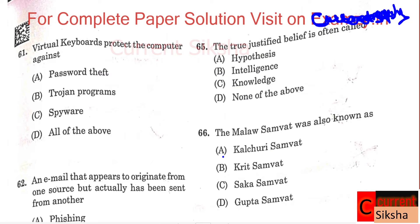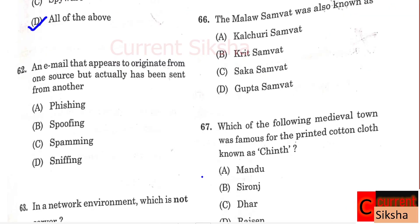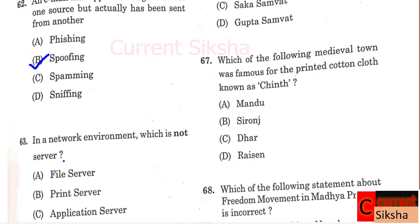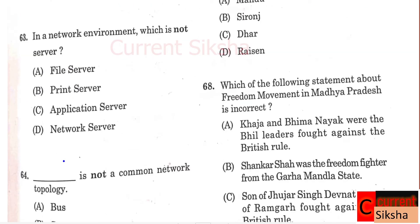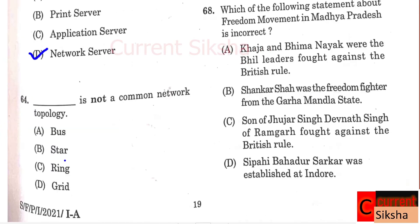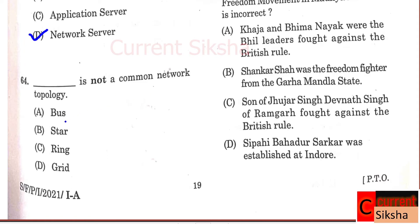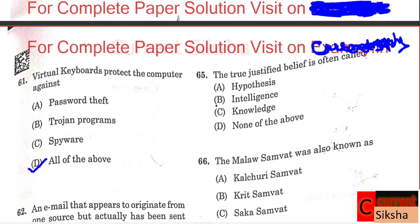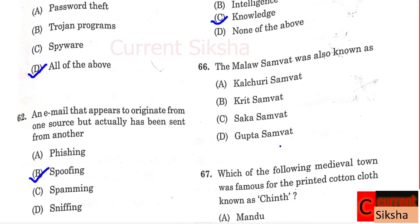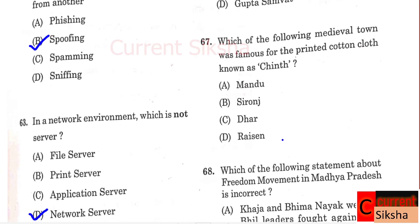Question 61: Virtual keyboard protects the computer against? Correct option D - All of the above. Question 62: An email that appears to originate from one source but has actually been sent from another? Correct option B - Spoofing. Question 63: In a network environment, which is not a server? Correct option D - Network server. Question 64: Which is not a common network topology? Correct option D - Grid. Question 65: The true justified belief is often called? Correct option C - Knowledge. Question 66: The Malwa Samvat was also known as? Correct option B - Kriti Samvat. Question 67: Which medieval town was famous for printed cotton cloth known as Chint? Correct option C - Dhar.